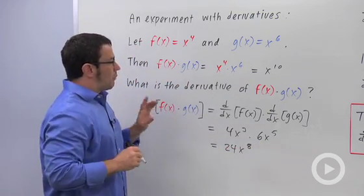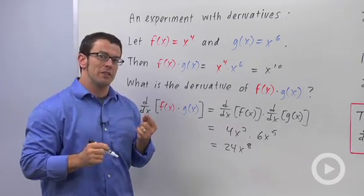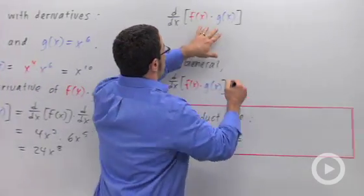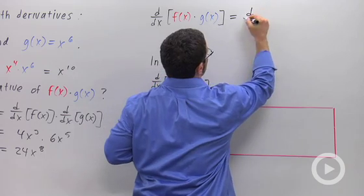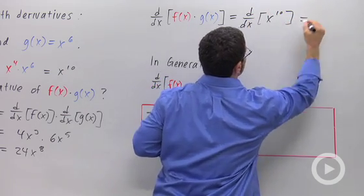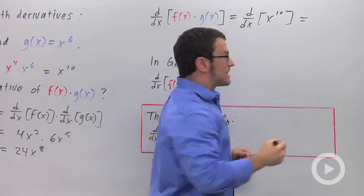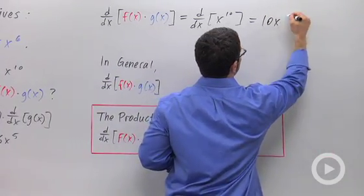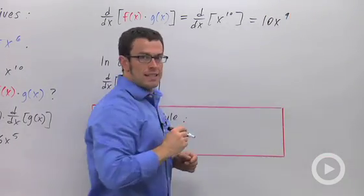Good. But I can also do this derivative a different way. The derivative of f of x times g of x is the same as the derivative of x to the tenth. And that derivative is 10x to the ninth, a very different function from 24x to the eighth.